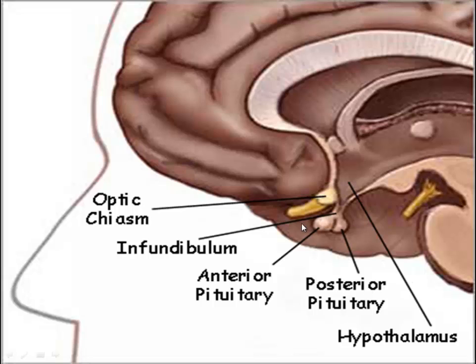The pituitary gland is an endocrine gland that is slightly pinkish in color. This pea-sized gland is about 1.3 cm in diameter and its weight is only 0.5 grams in humans. This pituitary gland is attached to the hypothalamus of the brain via a stalk called the pituitary stalk, or infundibulum.